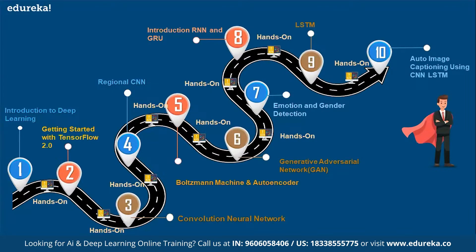Module ten also covers automatic image capturing. For example, at toll gates, cameras capture the vehicle's number plate and record whether the person paid the toll, generating a report. This is done using automatic image capturing techniques. The complete deep learning course roadmap covers almost ten modules, totaling around 30 to 32 hours, after which you receive a course completion certification.